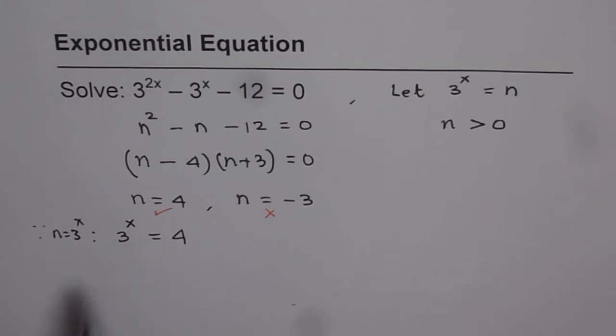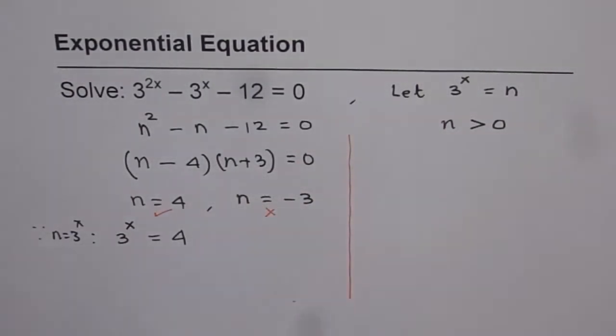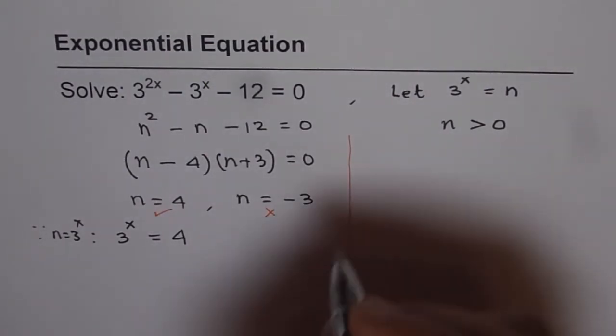To find x, we should take log both sides. So let's solve it. We have the equation 3 to the power of x equals 4.